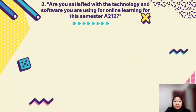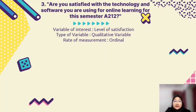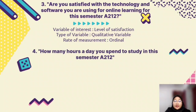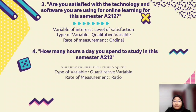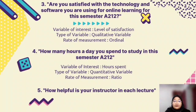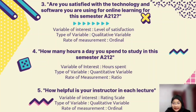The third variable is the level of satisfaction with the technology and software used for online learning. We use ordinal scale, which is a qualitative variable. Variable 4 is the hours spent by students in Semester A212 — the type of variable is quantitative and the scale of measurement is ratio. Variable 5 is how helpful the instructor is in each lecture, measured using a rating scale. This is ordinal, under qualitative variable.